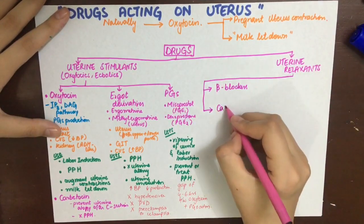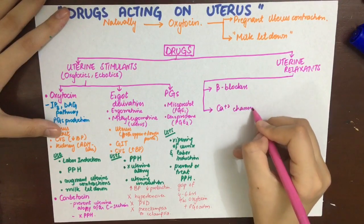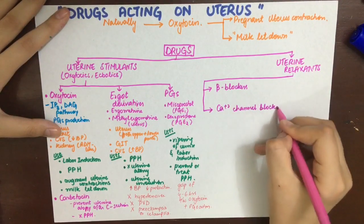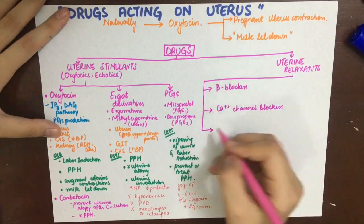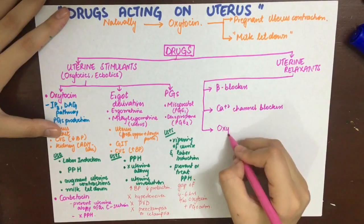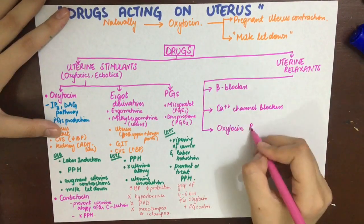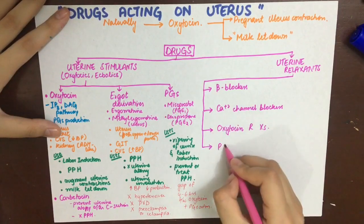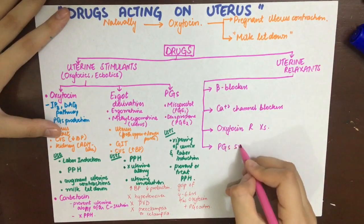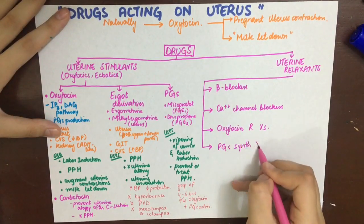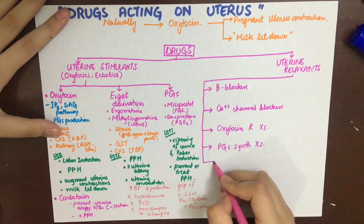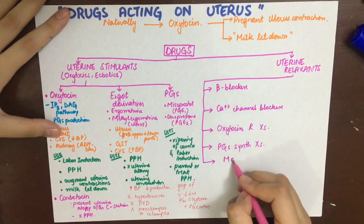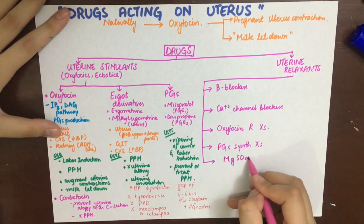Moving to uterine relaxants, or tocolytics, we have beta-blockers, calcium channel blockers, oxytocin receptor blockers, prostaglandin synthesis inhibitors, magnesium sulfate (MgSO4), progesterone, nitric oxide donors, and halothane.